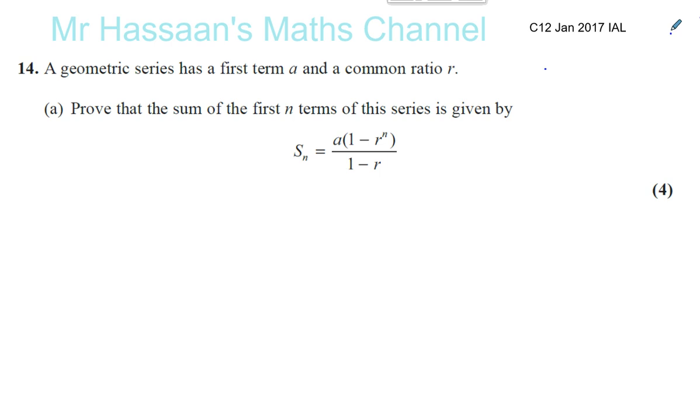So what we have to do here is the following. First of all, think about the sum of the first n terms. Now the first term is A. For a geometric series, you keep multiplying by the common ratio, so it's going to be A times R, and then A times R squared, and so on. Continue that same pattern.